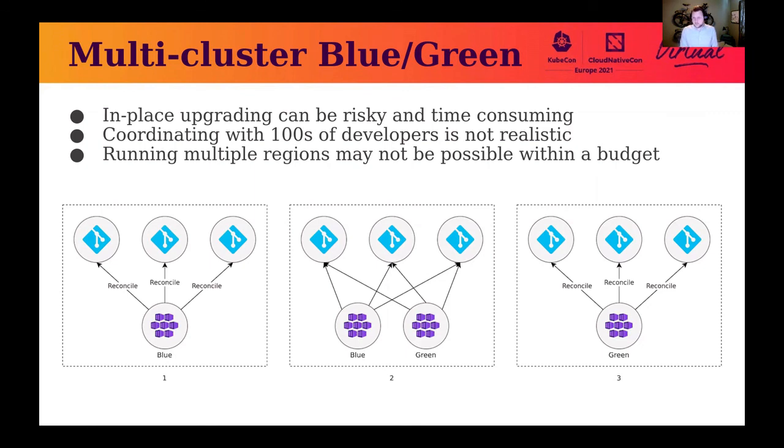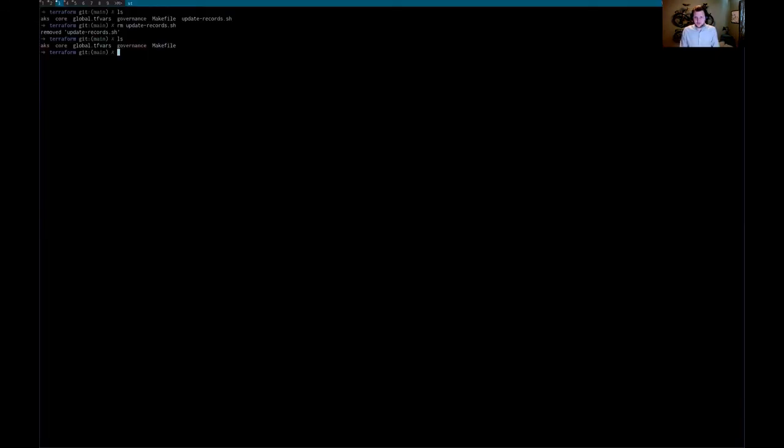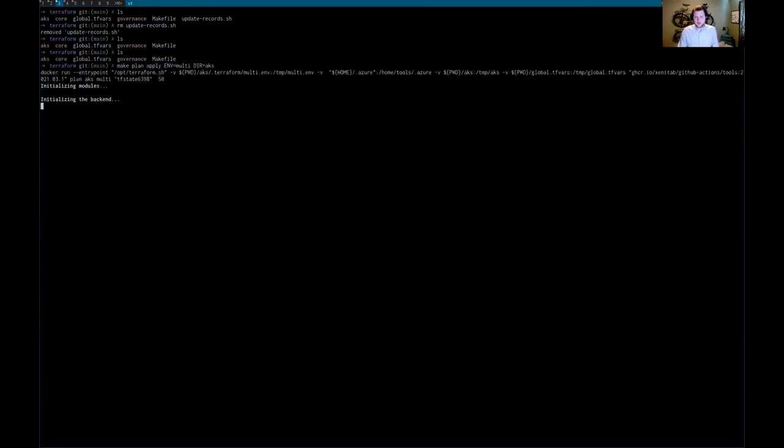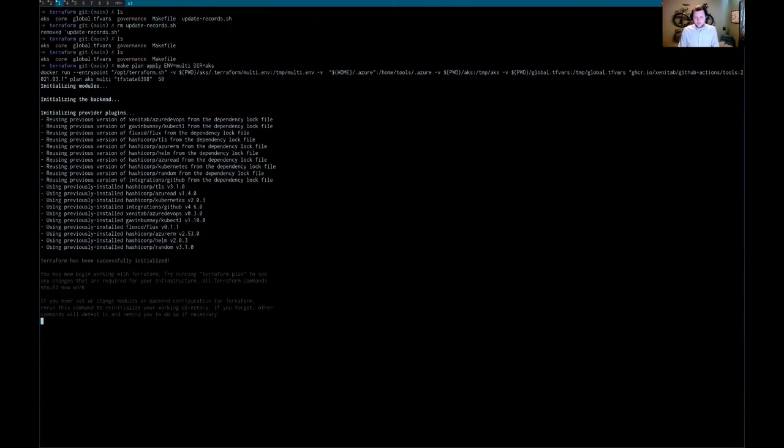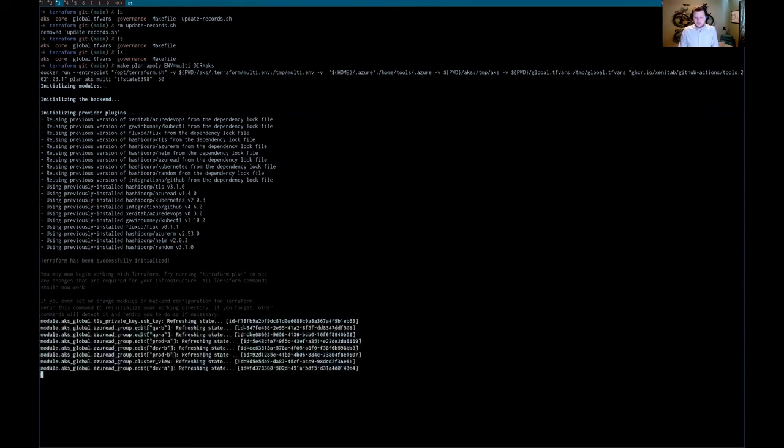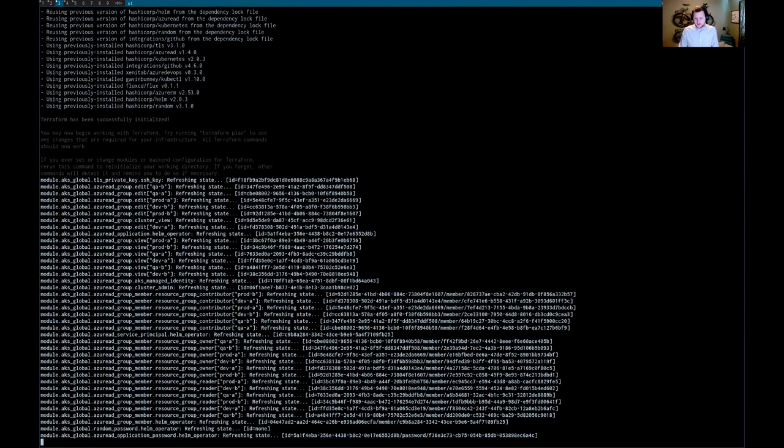To demo this, let's actually run a new cluster and see what happens. We're going to first plan and apply our new cluster. And then, we're also going to update the DNS records, because external DNS is creating our DNS records, so we need to allow the new external DNS instance in the new cluster to take over these DNS records and point it to the new load balancer. Let's just first wait for our cluster to be planned and applied.